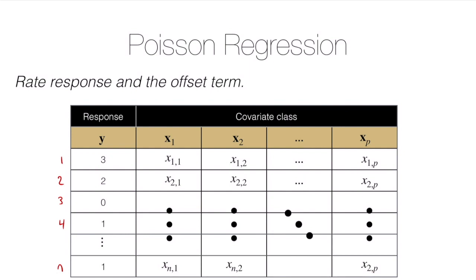In rate models, the mean of our response should really include the exposure, which could be a length of time or an area. For example, if we were counting an ecological feature across different fields of different sizes, counting insects in one plot of land versus another of different size, we should take that size information into account.